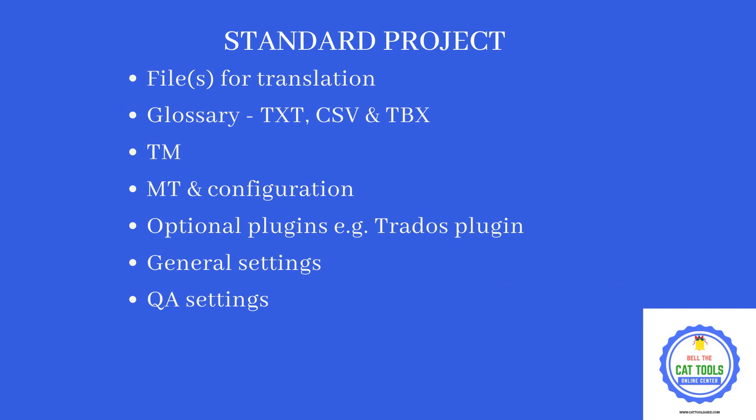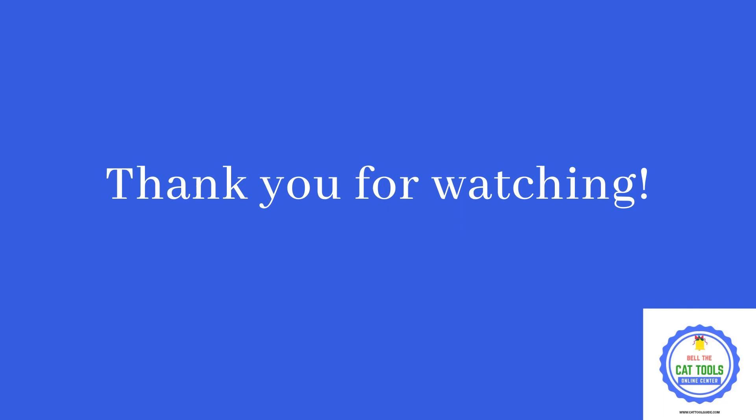In a standard project, you will have files for translation, optionally a glossary, certainly a TM to save your translations, optionally paid machine translation, and additional plugins such as the Okapi Framework plugin. There are also general settings and QA features available in OmegaT. Thank you for watching this video — I hope it is very useful to you. Please like and subscribe to this CAT tool guide channel. Thank you and have a nice day.